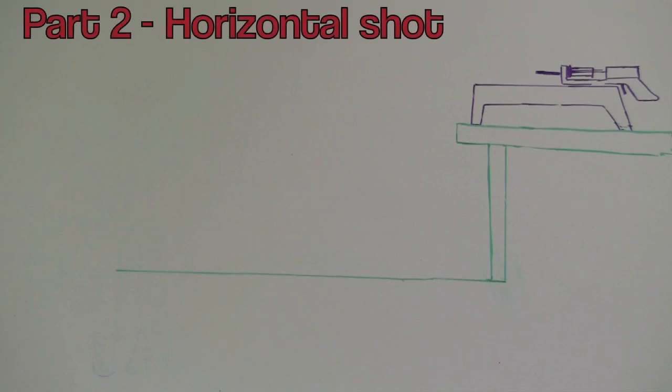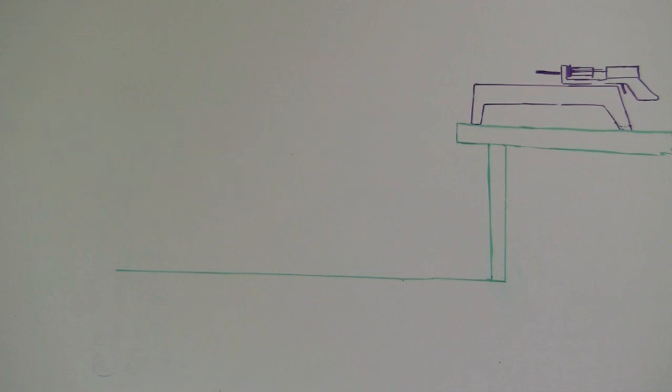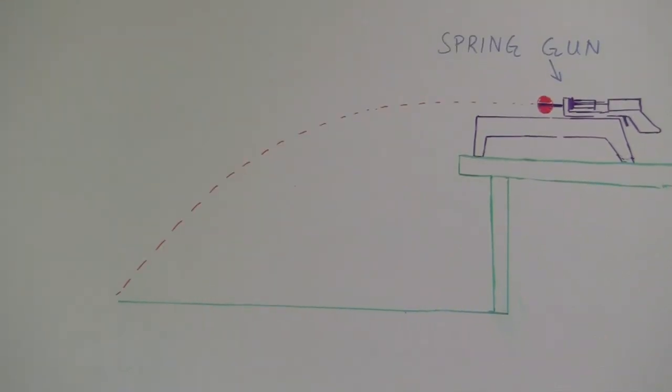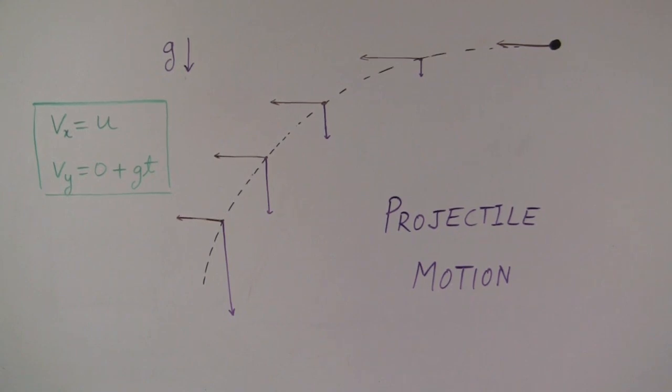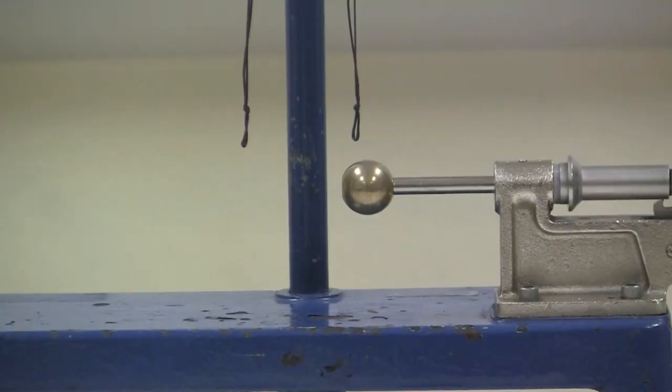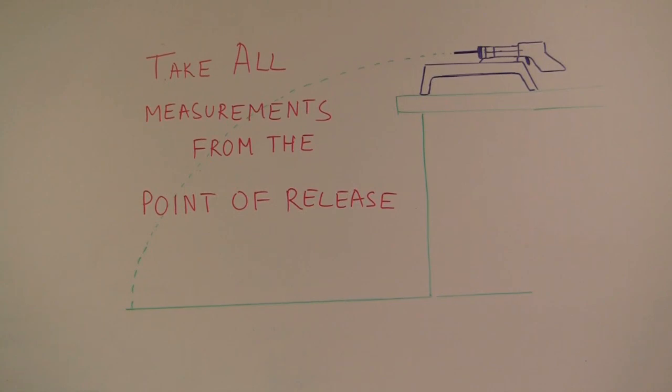For the second part, after finding u, predict the impact point on the floor for the ball when it's shot horizontally from a position on the table. The ball falls with a parabolic trajectory with its velocity in the y direction increasing linearly with time and the velocity along the x direction remaining constant. Make sure that you take all your range and height measurements from the point of release of the ball.